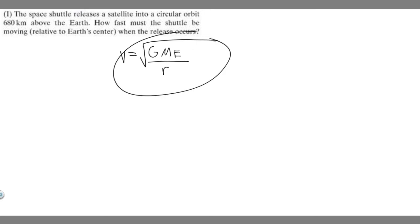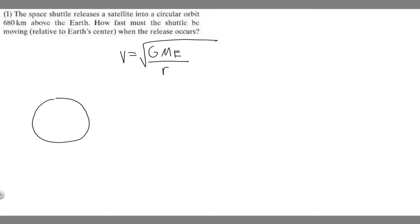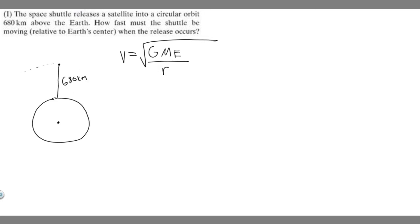This is the formula we're using. Let me draw what's going on to give you a better idea. So imagine this is our Earth — perfectly circular, even if my drawing isn't. This is the center, and we know the space shuttle is releasing the satellite 680 kilometers above the Earth's surface. That's where the satellite is, rotating in a circular orbit around the Earth.